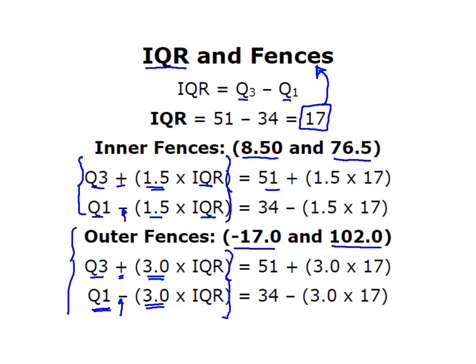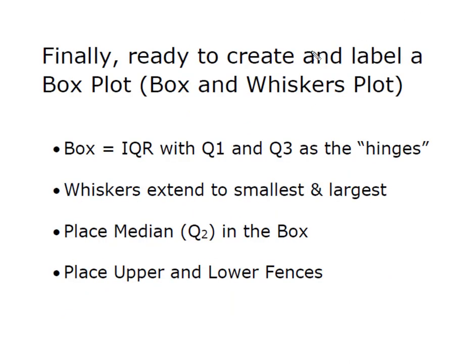We're almost ready to build our box and whisker plot. We're going to locate our box on our plot, and we're going to use Q1 and Q3 as the hinges. That's going to make the box in our box and whisker plot the same width as our IQR. When we create our whiskers, we're going to extend them to the left until we reach our smallest value and to the right until we reach our largest value.